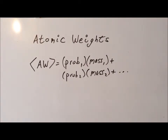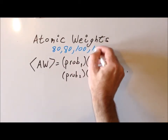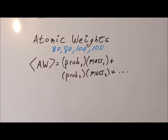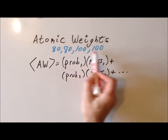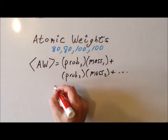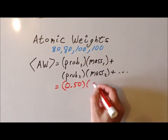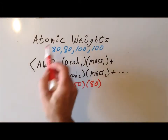Before we use this actual method to calculate the atomic weight of a particular element, let me show you how we would apply this method to the previous example where we had the four student exam scores of 80, 80, 100, and 100. We notice that we have two different possible scores: score number one is 80, and score number two is 100. For the first possibility of 80, two out of the four students scored 80. So the probability of scoring an 80 on the examination was 50%, which we write as a decimal: 0.50. That's the probability of getting an 80, and then we multiply it by the actual value of the score, which is 80.